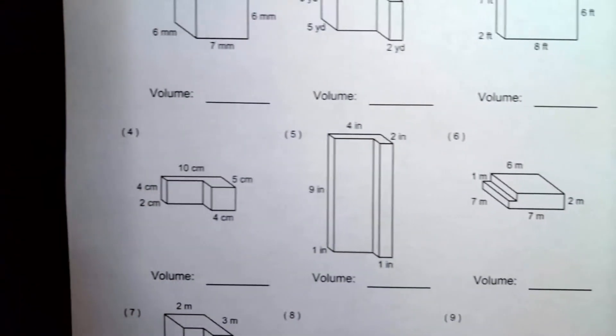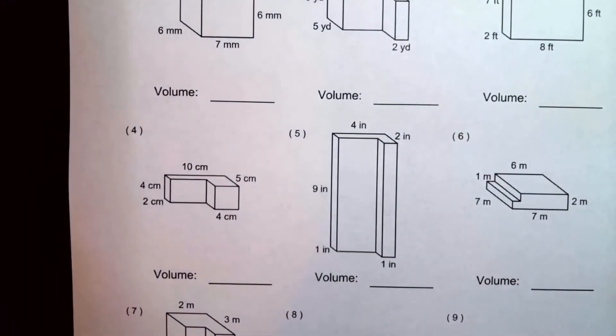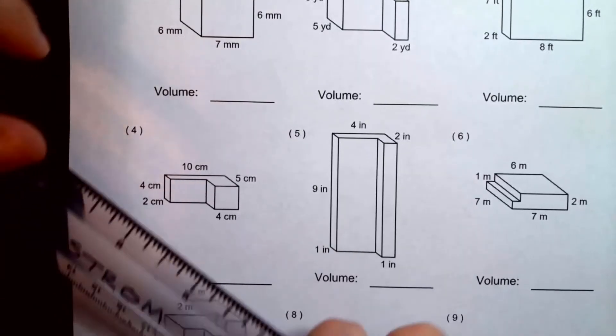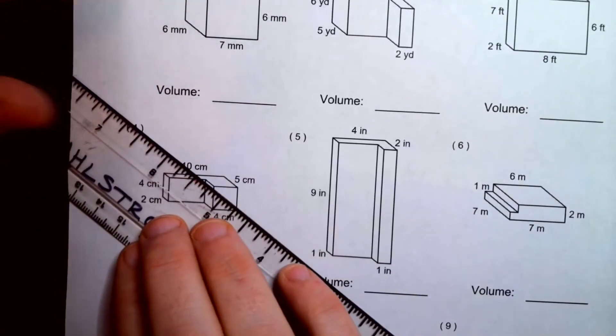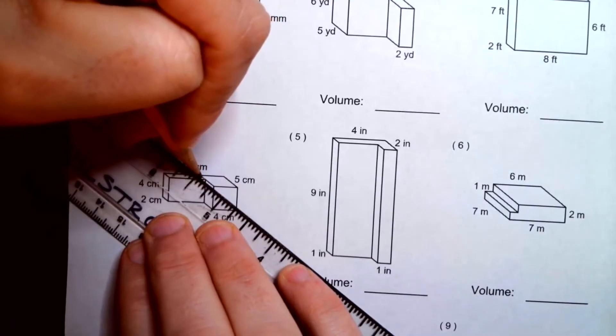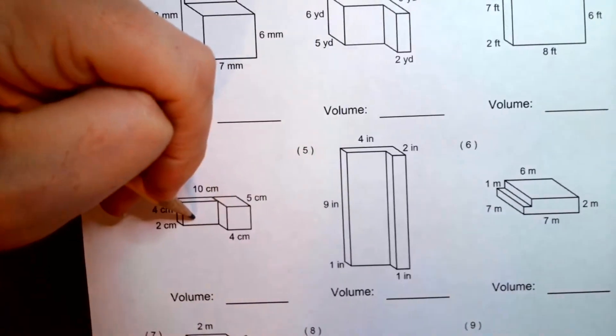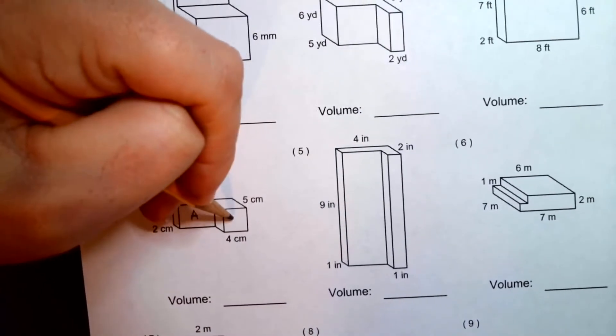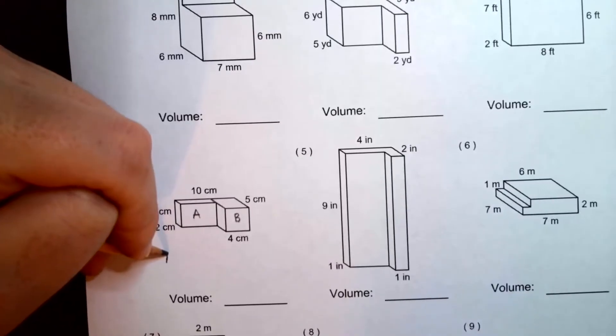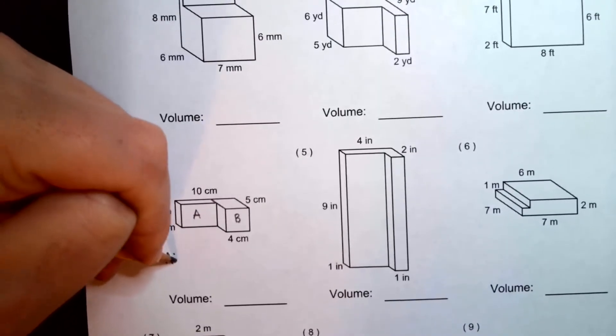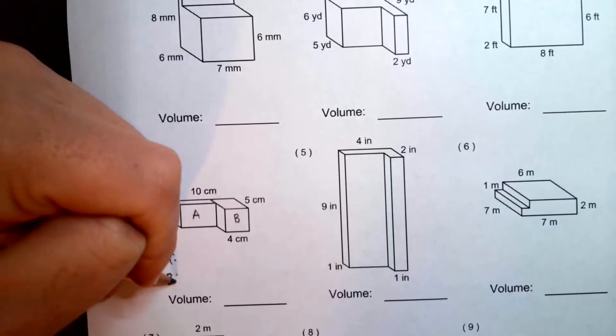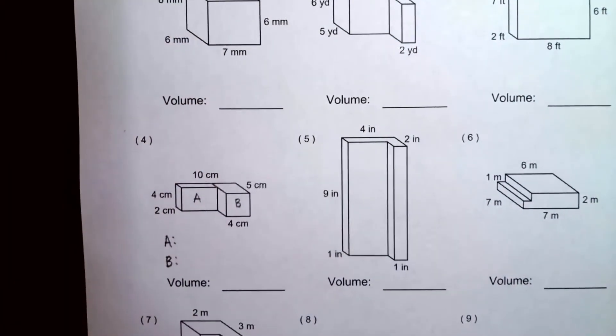Now, I want you to try number 4. We will split it. I will split it this way for you. So, we'll just call the one on the left prism A, and we'll call the one on the right prism B. So, what is the expression to find the volume for prism A?